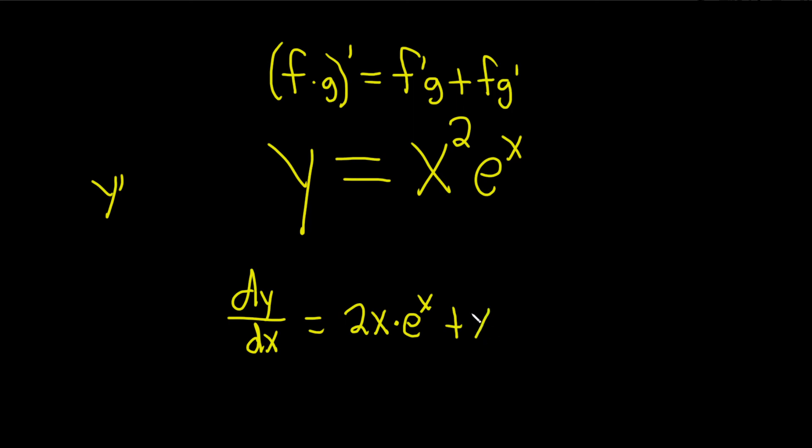x squared times the derivative of the second. Well, the derivative of e to the x is just e to the x.